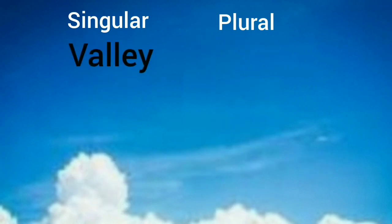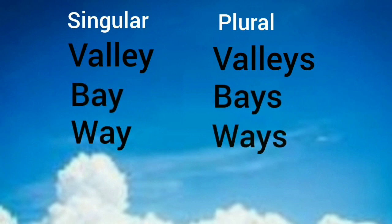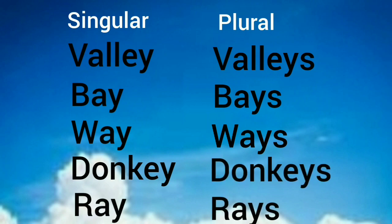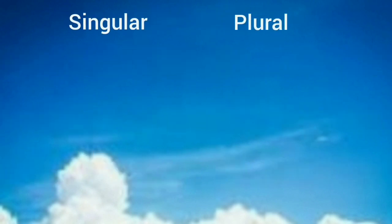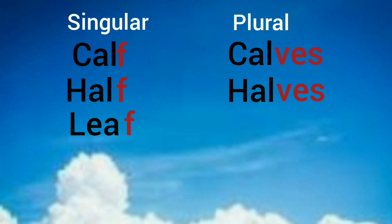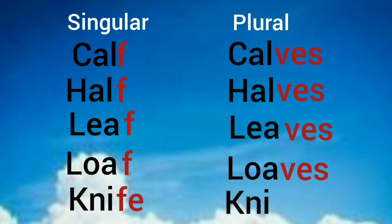More examples with vowel before -y: bay-bays, way-ways, donkey-donkeys, ray-rays. Nouns ending in -f or -fe form their plurals by changing -f/-fe to -ves: calf-calves, half-halves, leaf-leaves, loaf-loaves, knife-knives.